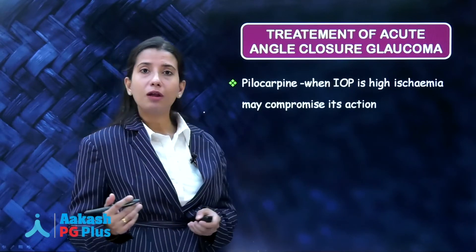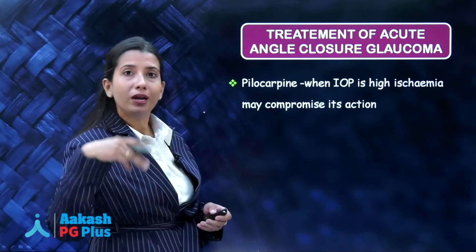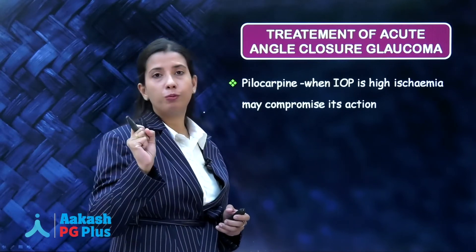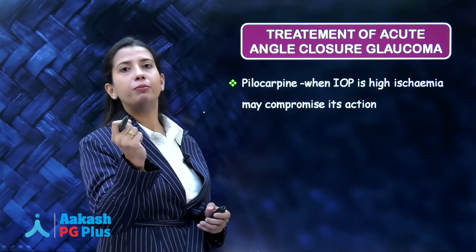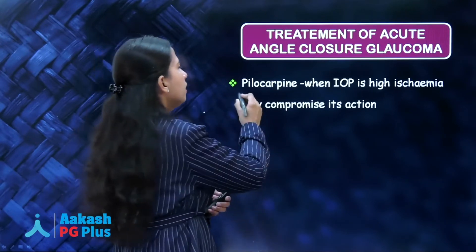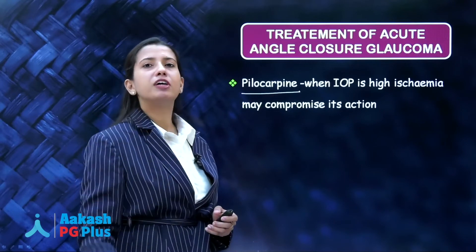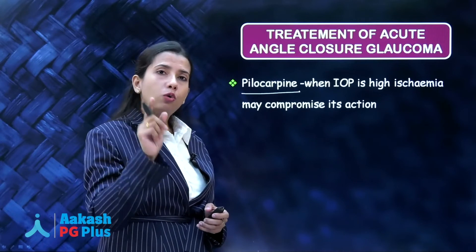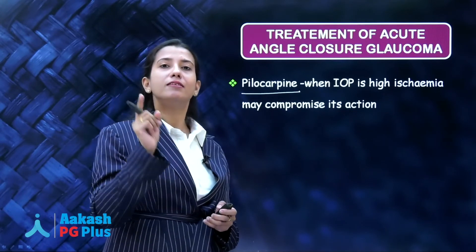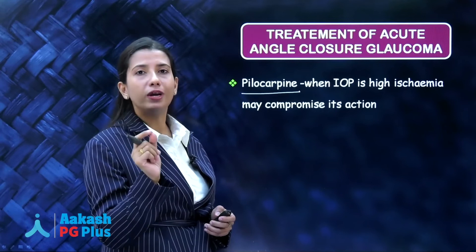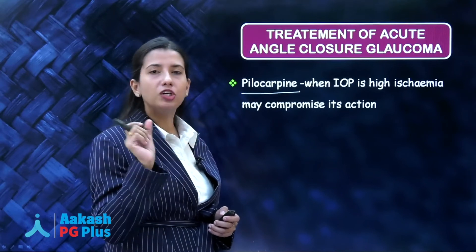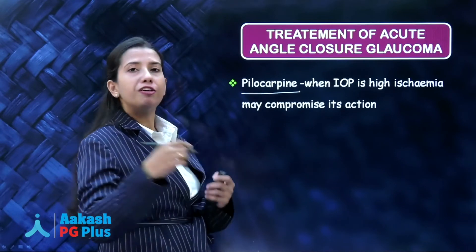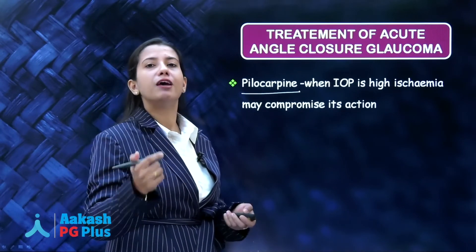Pilocarpine is very important here because pupil dilation caused the attack, so the attack will be relieved by pupillary constriction — done by pilocarpine. But why not give pilocarpine first? Because the pressures are so high that there is ischemia of the sphincter pupillae and it is not functioning — even if you give pilocarpine, it won't act. So we give pilocarpine only after pressures have lowered.